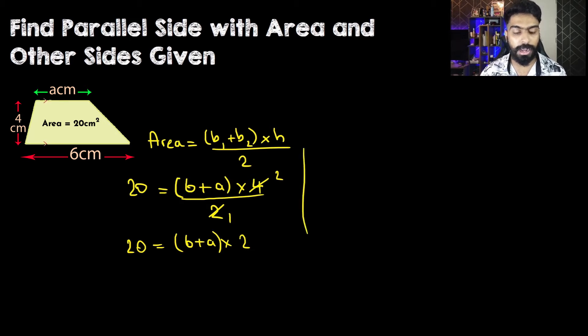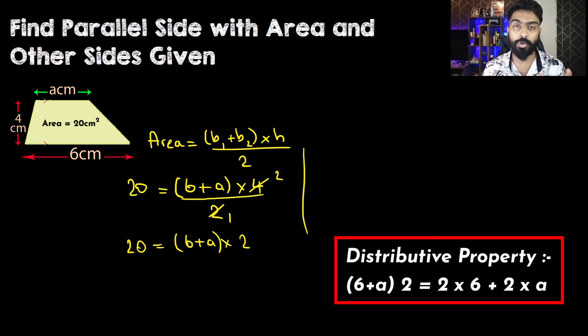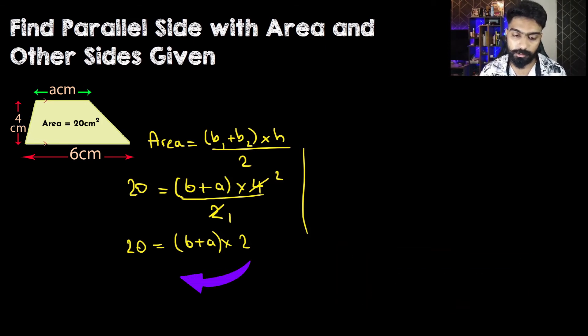What I'm going to do now is transpose this 2 to the other side. Now of course, in this kind of equation there are many ways we can solve it. One way is transposing 2 to the other side, or we can also use distributive property to expand these brackets. But I'm going to transpose 2 to the other side.